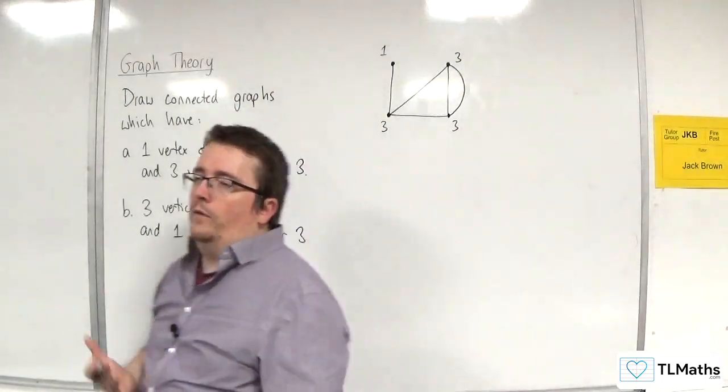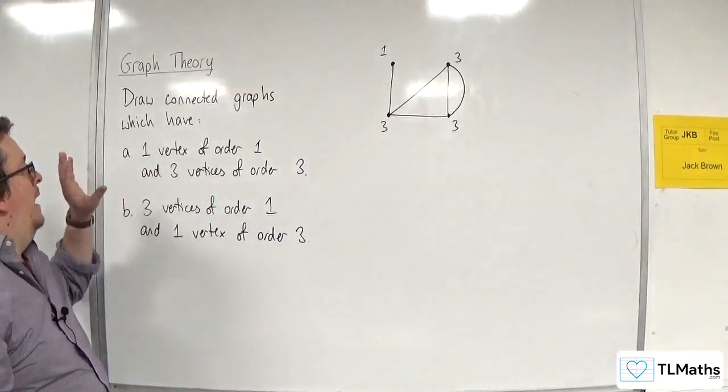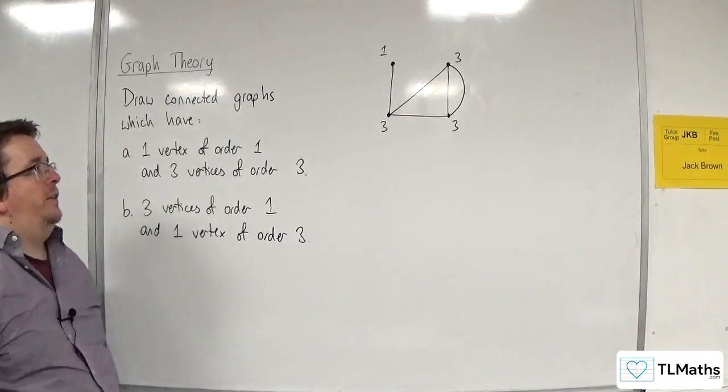now they've both got order 3. Okay, so here is an example of a connected graph that has one vertex of order 1 and three vertices of order 3.